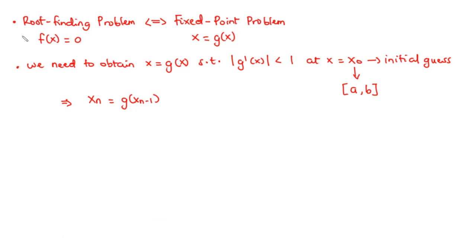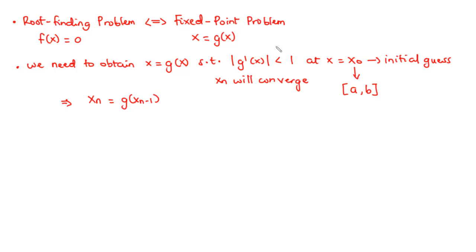To summarize: given f(x) = 0, we transform the root finding problem into a fixed point problem of the form x = g(x), choosing the form such that |g'(x)| < 1 at x = x₀. If this condition is satisfied, then x_n will converge to the root of the given equation. However, if the absolute value becomes greater than one, then x_n will diverge.